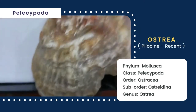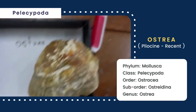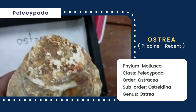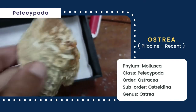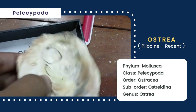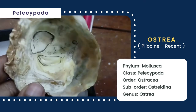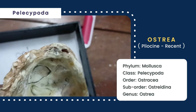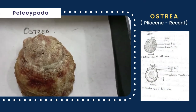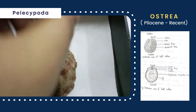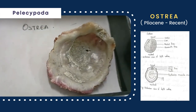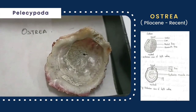Finally, this is Ostrea, whose shell is thin, oval-shaped, and inequilateral. The length is less than its height. The valve has monomyarian type of muscle scar with a large posterior muscle impression. This is another sample of Ostrea, which has the same characteristics as the previous one.